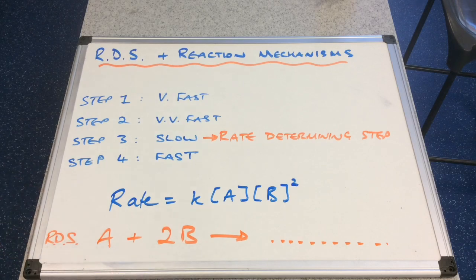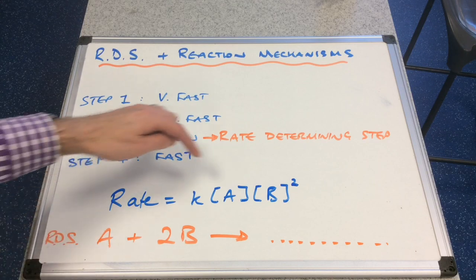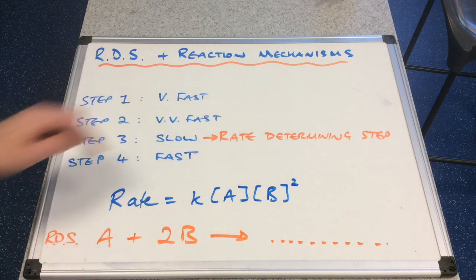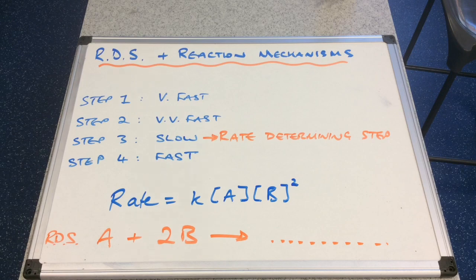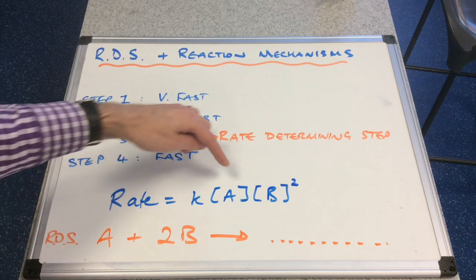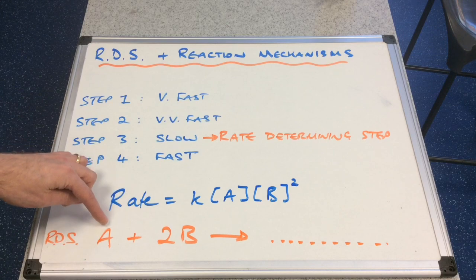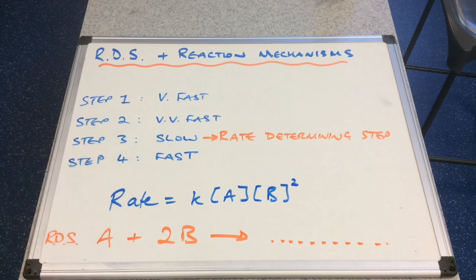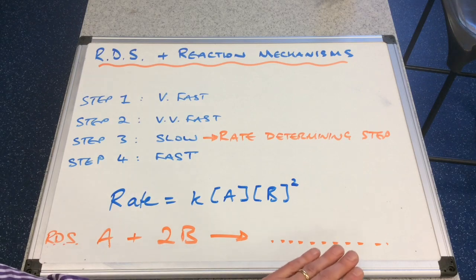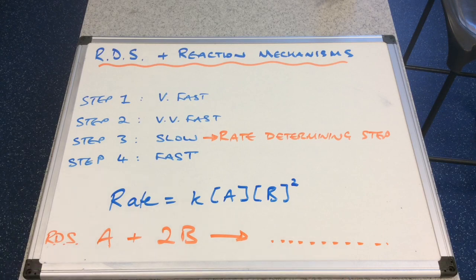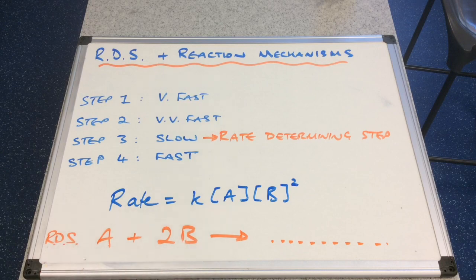There's also a connection regarding order, known as the molecularity of the reaction. In simple terms, if something is order one, there is one of that species involved in the rate determining step. If B is order two, there are two B molecules in the rate determining step. It doesn't tell us what the products are — only the reactants and the number of reactants involved.